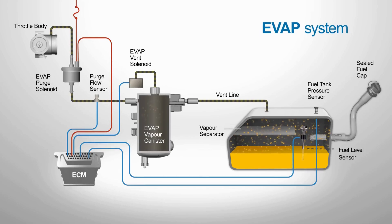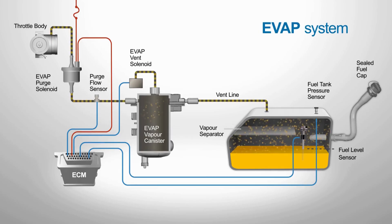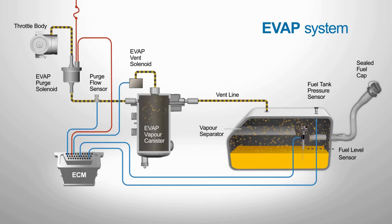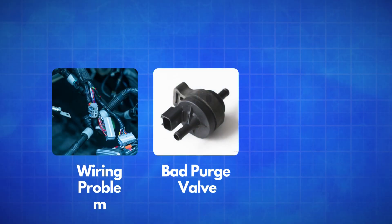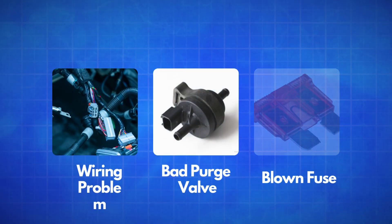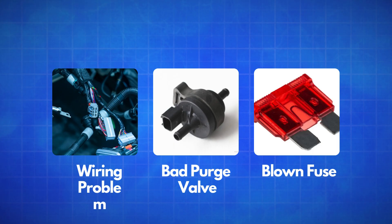The EVAP system is designed to prevent fuel vapors from escaping into the atmosphere, and the purge valve plays a crucial role in this process. But when there's a problem — like a broken wire, a faulty purge valve, or even something as simple as a blown fuse — the PCM can't properly control the valve.